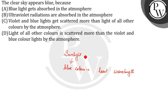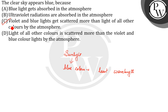So the correct answer is: violet and blue lights get scattered more than light of all other colors by the atmosphere. Option number C is our correct answer.